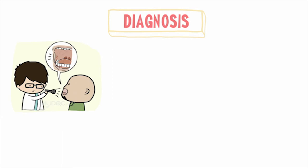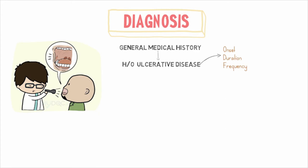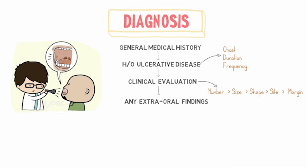There is no particular diagnostic test for RAS or aphthous ulcers. A complete and thorough patient history or medical history is significant to the diagnostic process. A detailed history of the ulcerative disease — including the onset, frequency, and duration of the ulcer — should be noted, as well as a clinical evaluation of the number, size, shape, site, and margins of the ulcers. It is also important to note any extra-oral findings such as ocular, genital, or skin lesions, or any gastrointestinal tract symptoms.